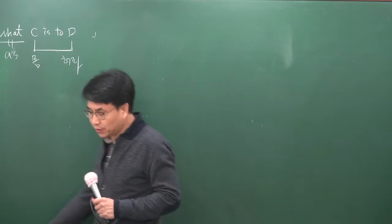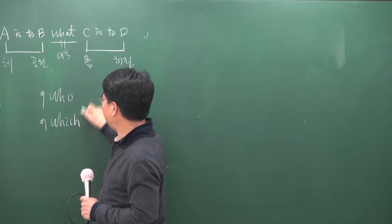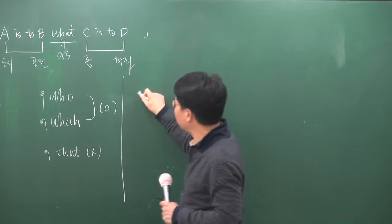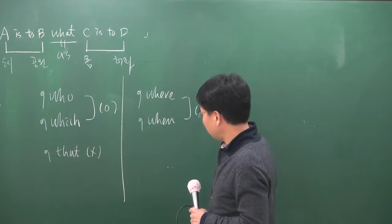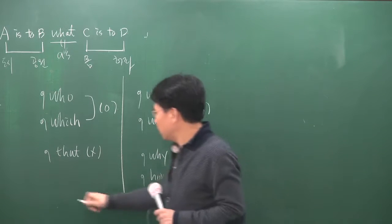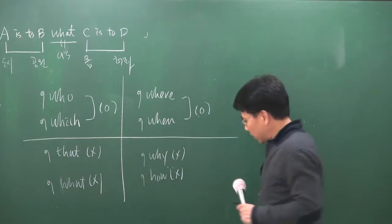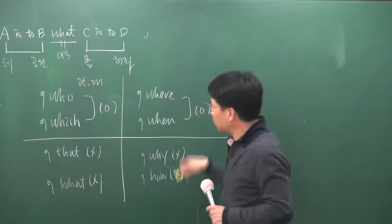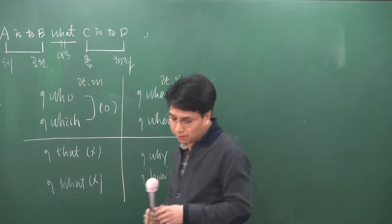계속적 용법 정리: comma who, comma which는 쓸 수 있습니다. 그러나 comma that은 안 됩니다. 관계부사에서는 comma where, comma when은 쓸 수 있습니다. 그러나 comma why, comma how는 안 되고, comma what도 안 됩니다.